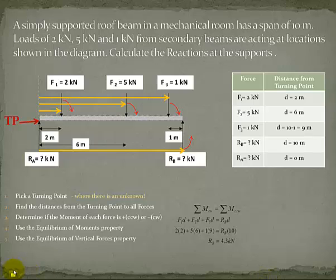Once we have that, we can use our equilibrium of vertical forces property. So the forces up have to balance the forces down. The ups are the RA and RB, and the downs are the force 1, 2, and 3. Putting in our numbers, RA is unknown. We just got RB, so there's the 4.3. And the downward forces are 2 kilonewtons, 5 kilonewtons, and 1 kilonewton, respectively. Again, we have a linear equation with a single unknown. Rearranging, we get our reaction A is 3.7 kilonewtons.